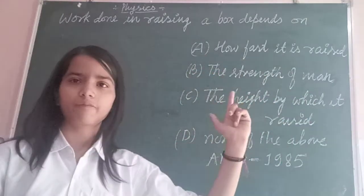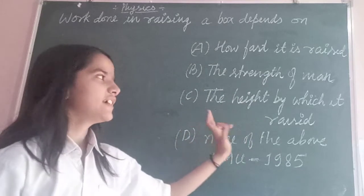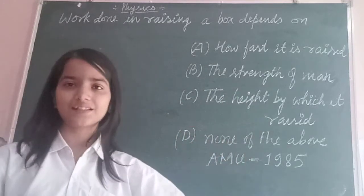Option B, the strength of man. Option C, the height by which it is raised. Option D, none of the above.